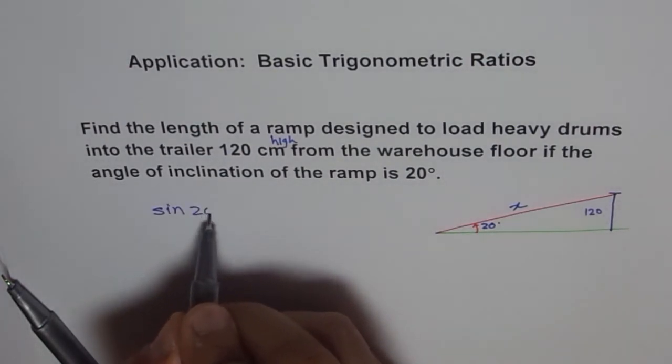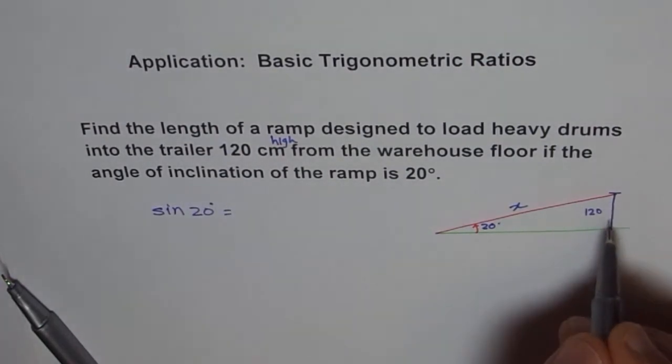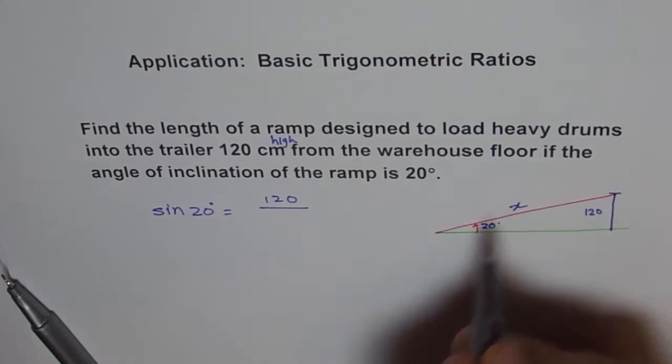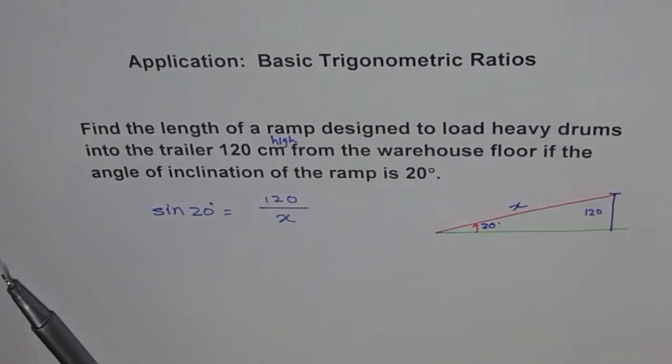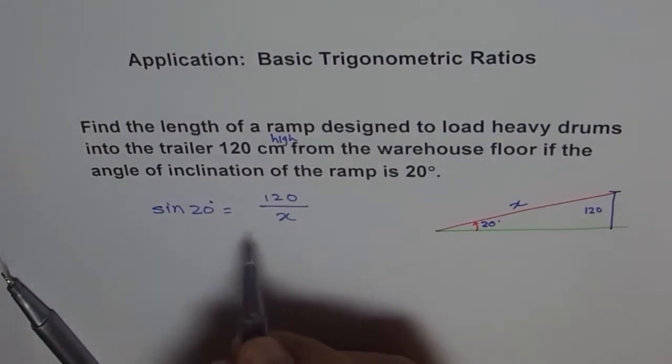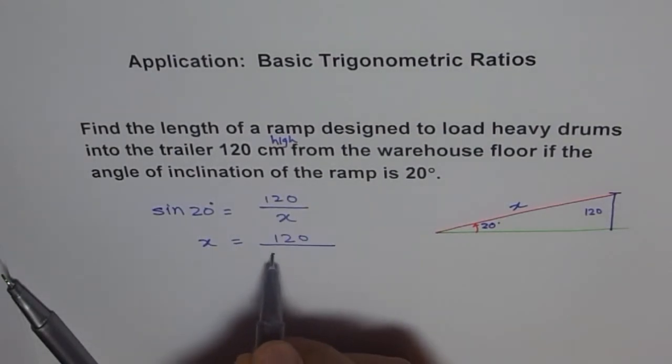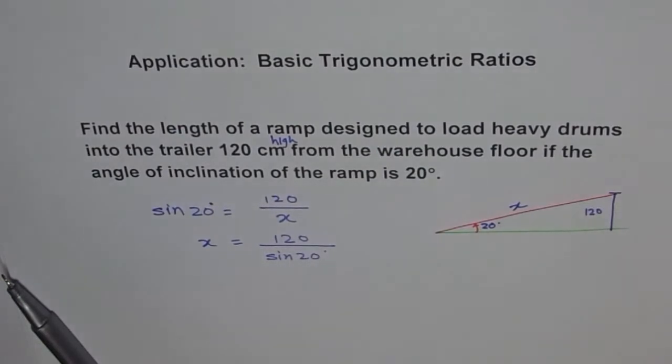So sine of 20 degrees should be equal to the opposite side, which is 120, over hypotenuse, which is x. And so x is equal to 120 divided by sine of 20 degrees.